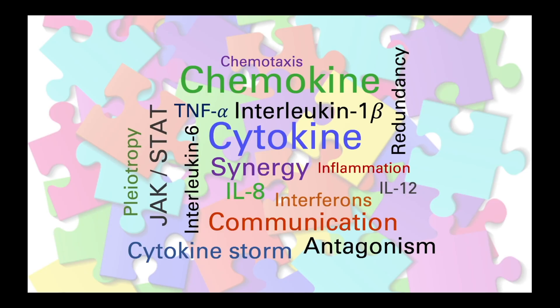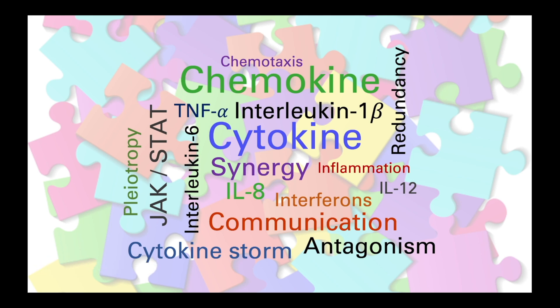There are far too many cytokines and chemokines to discuss each one individually during this course. You have already encountered a number while looking at the innate immune response, and more will be introduced when we start looking at the adaptive immune response. Please don't try to remember what every single cytokine does, but do try to remember some of the key examples and the broad functions that they control. In addition to these cytokines, our body has another soluble defence system called complement, and we will look at that in the next video.